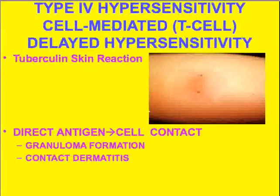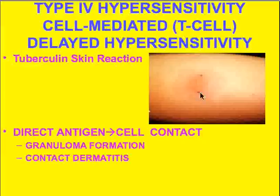Type four hypersensitivity can be best defined as a cell coming in direct contact with an antigen — that is cell-mediated immunity. For example, in the tuberculin skin reaction, a protein derivative of tuberculin causes direct cellular contact, sometimes resulting in granuloma formation. It is definitely an inflammatory reaction in which direct antigens come in contact with T cells, causing a direct cellular infiltrative type of reaction.